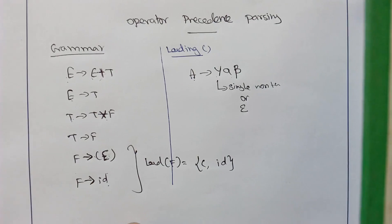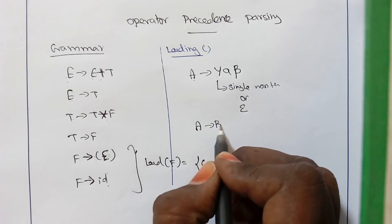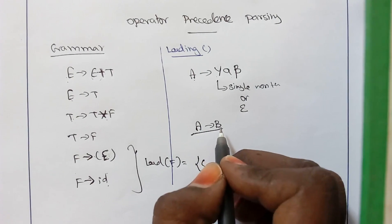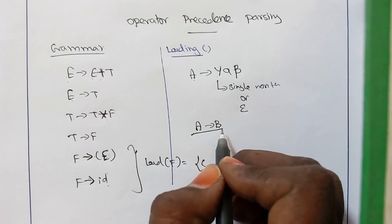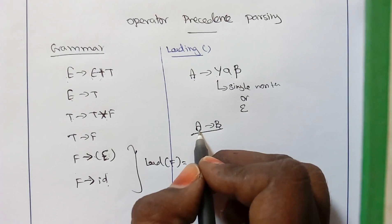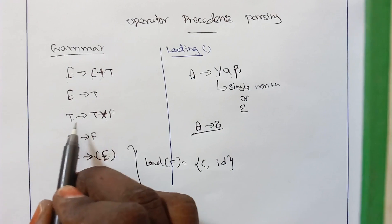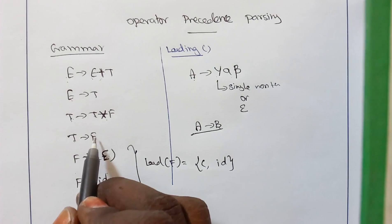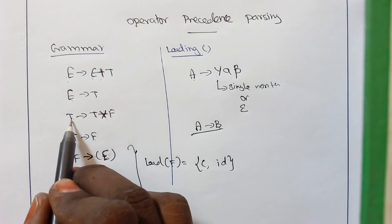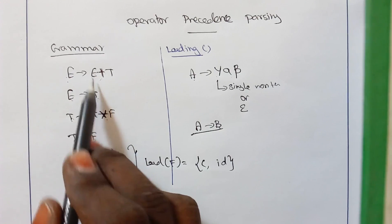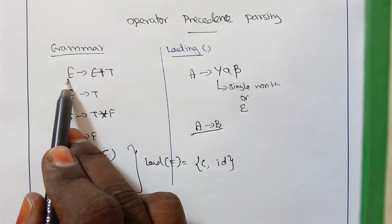The second rule for finding LEAD of a variable is: whenever a production starts with a non-terminal B, and if a terminal symbol is in LEAD of B, then we have to add it to LEAD of A as well. Whatever is in LEAD of B should be added to LEAD of A. For example, when a production starts with a variable, we find the LEAD of that variable and add it to LEAD of the left-hand side.